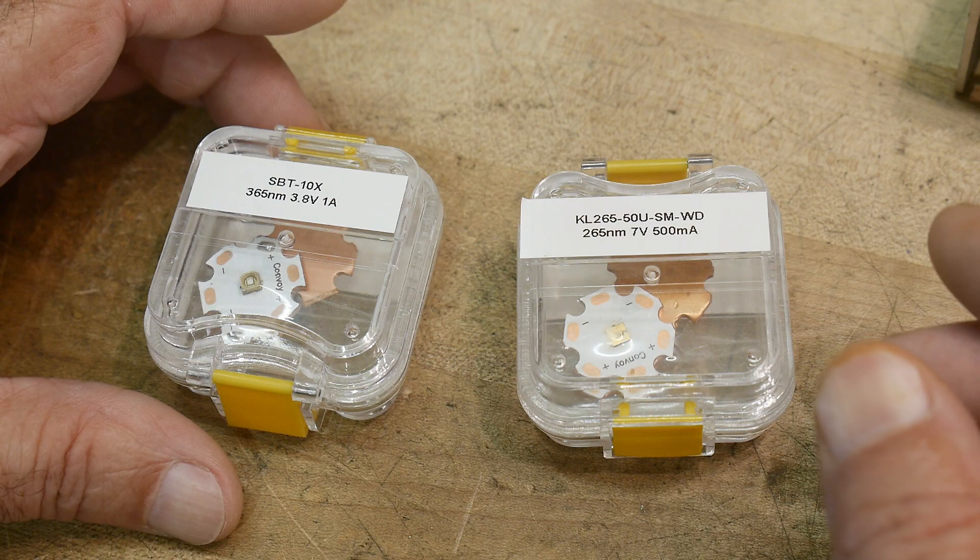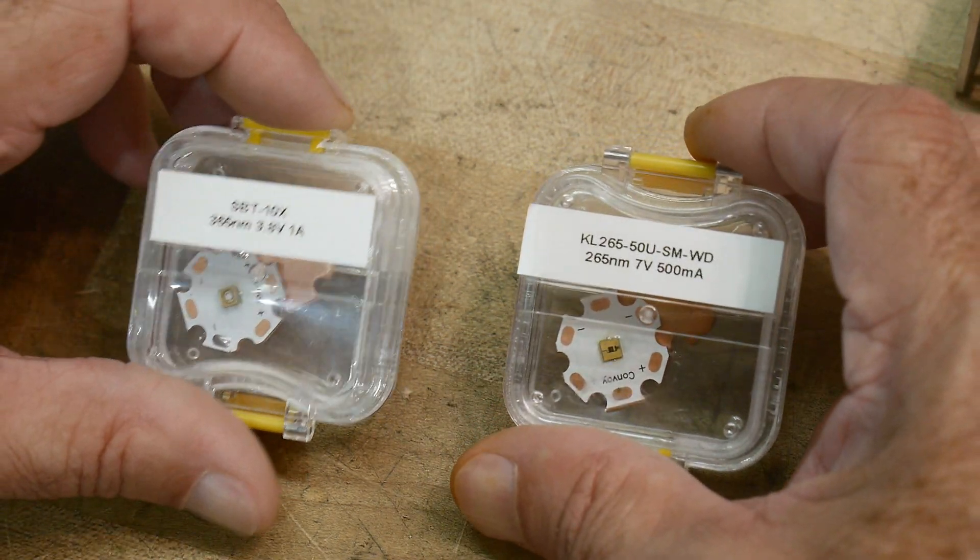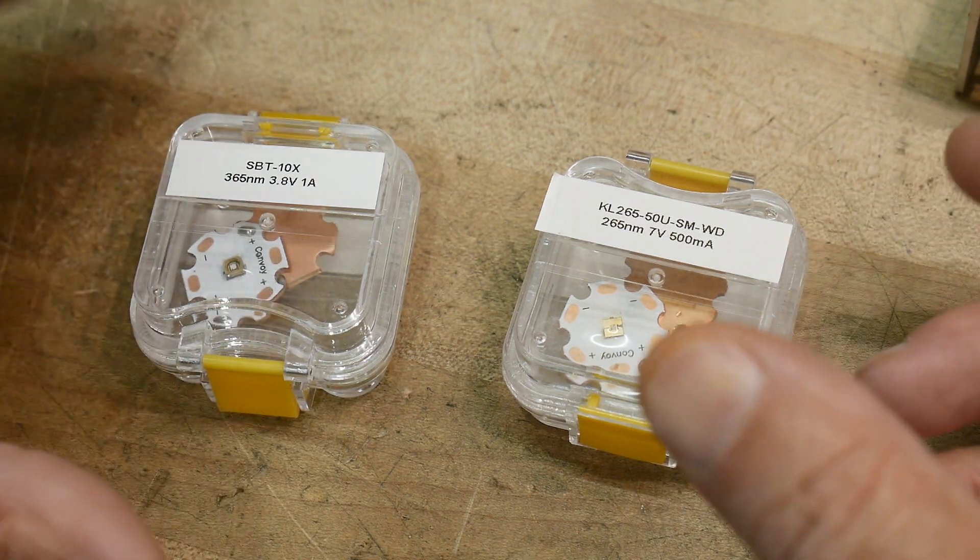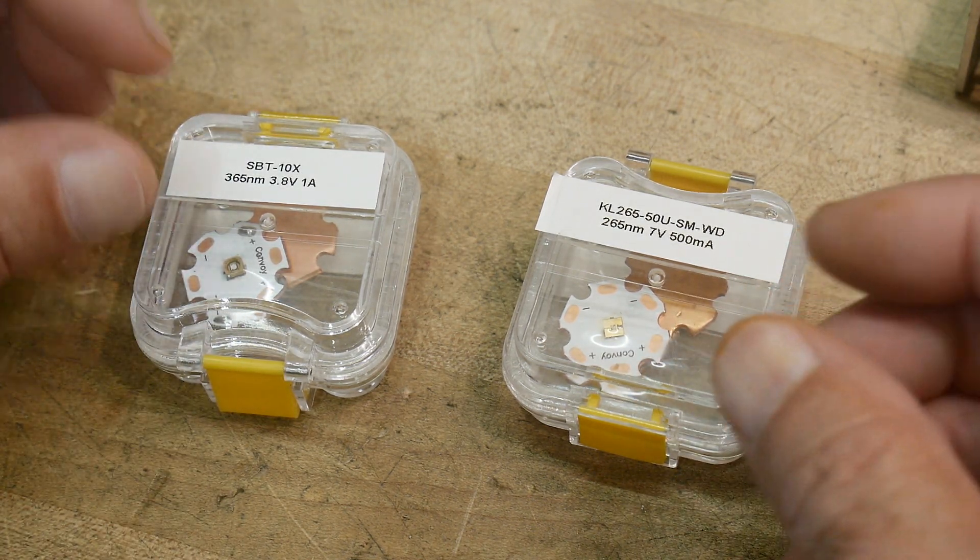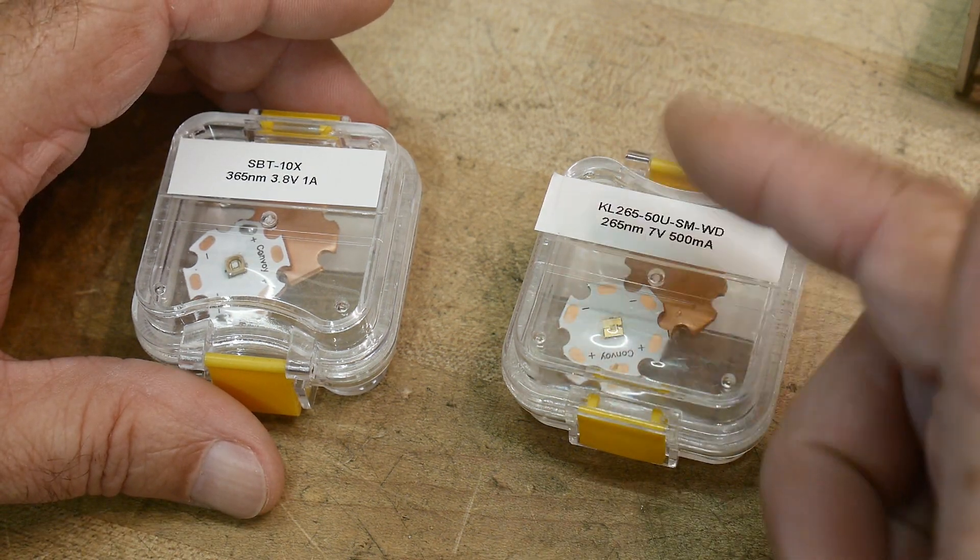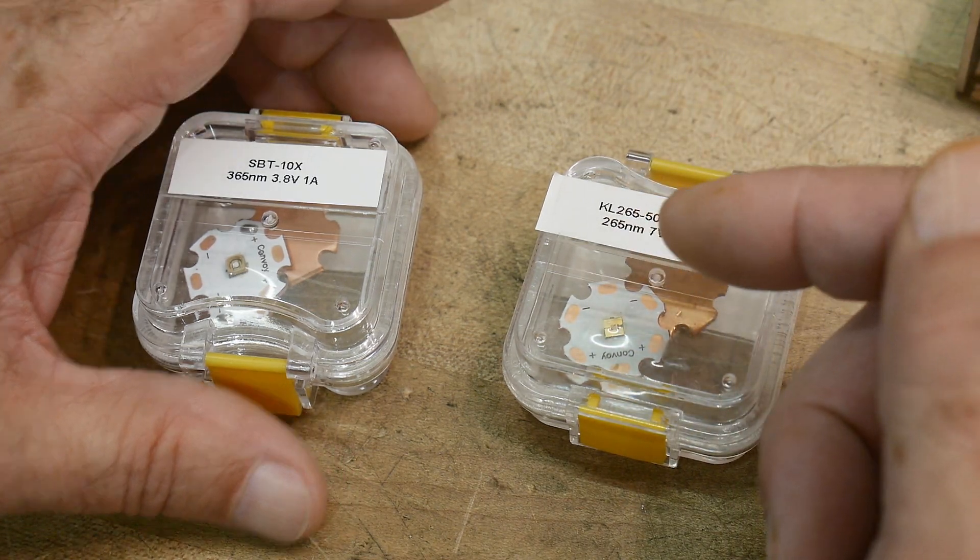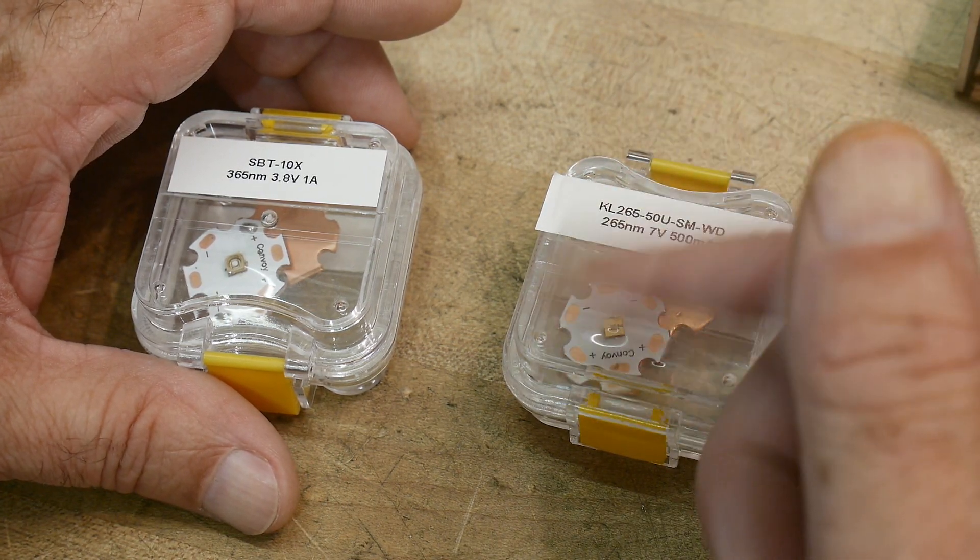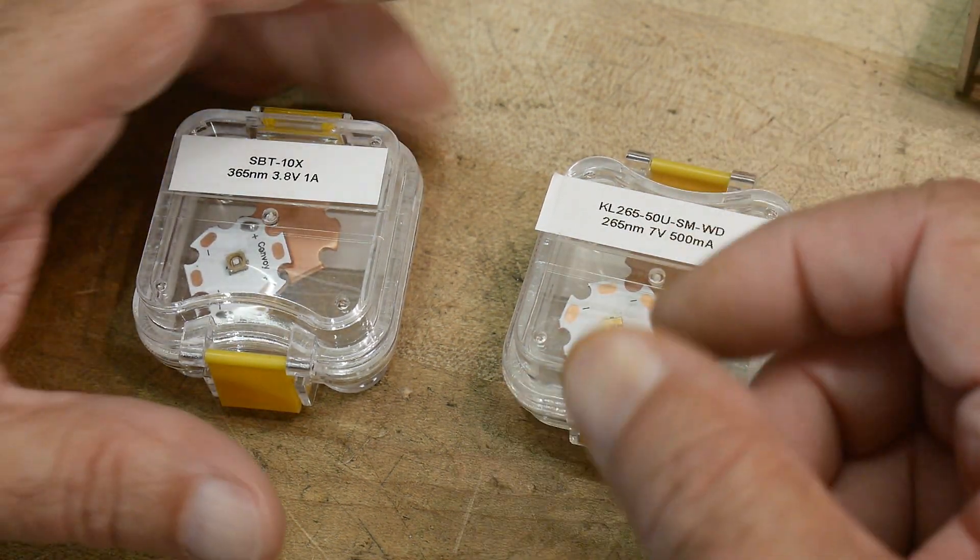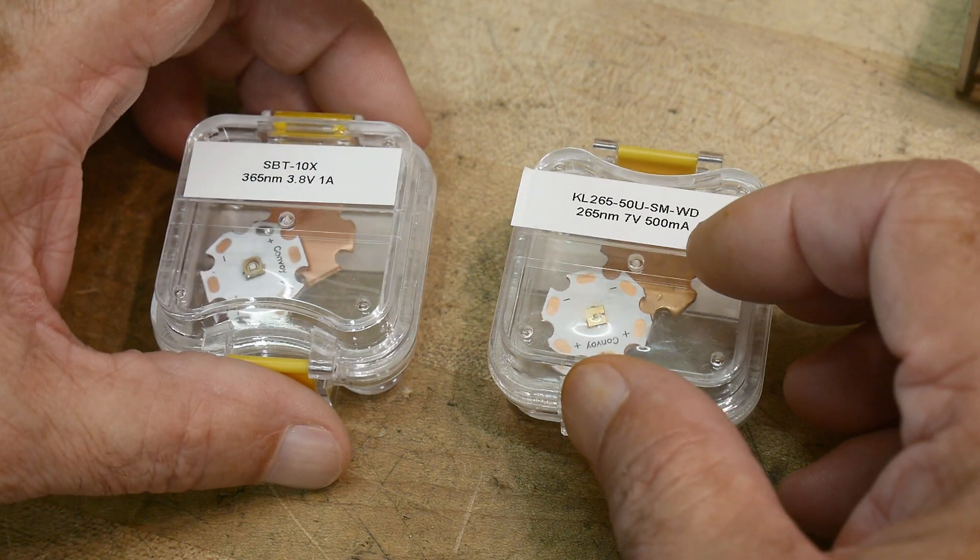So these are ultraviolet. These are the things that give you skin cancer. Yeah, UV is the most energetic. So the shorter the wavelength, the faster the electromagnetism wiggles. And the speed at which it wiggles is the energy. So if you wiggle faster, that means you have more energy.